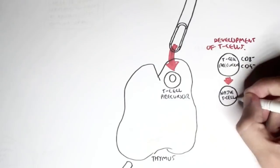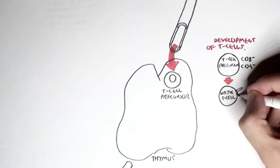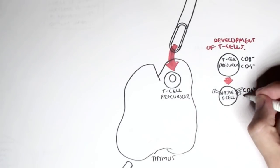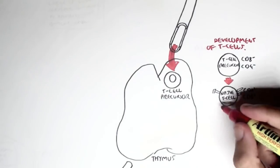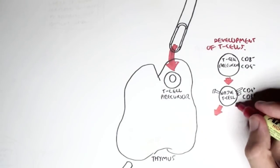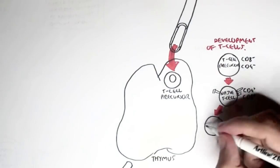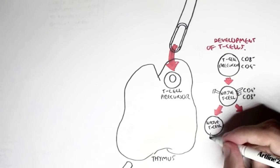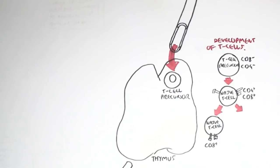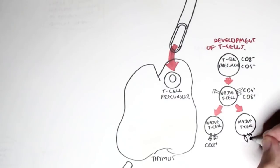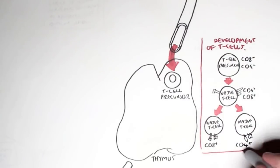However, in the thymus, the T cell precursor will become a naive T cell, which will then express both CD4 and CD8 receptors. And so we write this as CD4 plus and CD8 plus because it expresses both of them. Now this naive T cell which expresses both CD4 and CD8 co-receptors can then become specifically either a naive T cell which only expresses a CD8 co-receptor or a naive T cell which specifically expresses a CD4 co-receptor. So we write this as a CD8 cell or a CD4 cell.